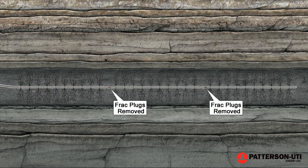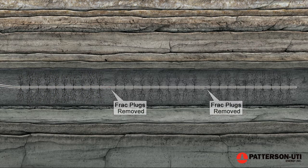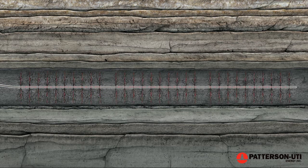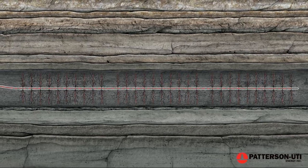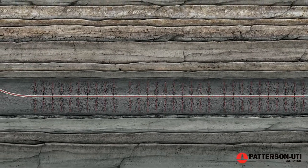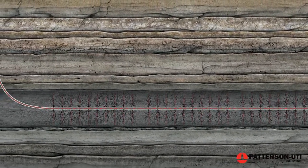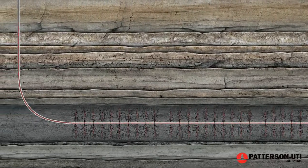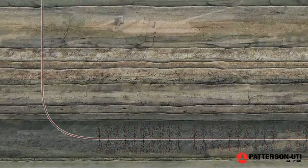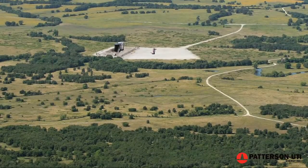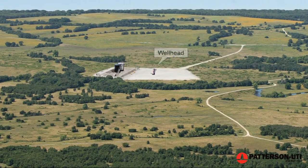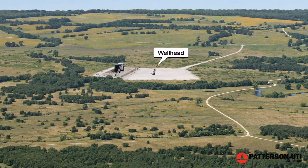Once fracking is completed, the plugs are drilled out, allowing the gas to flow up the wellbore. The next step is to install a permanent wellhead, also known as a Christmas tree, and other necessary surface equipment.